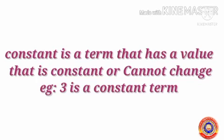Next, Constant. Constant is a term that has a value that is constant or cannot change. Example: 3 is a constant term. Constant means it has a constant value, does not change its value anywhere. For example, the numbers.